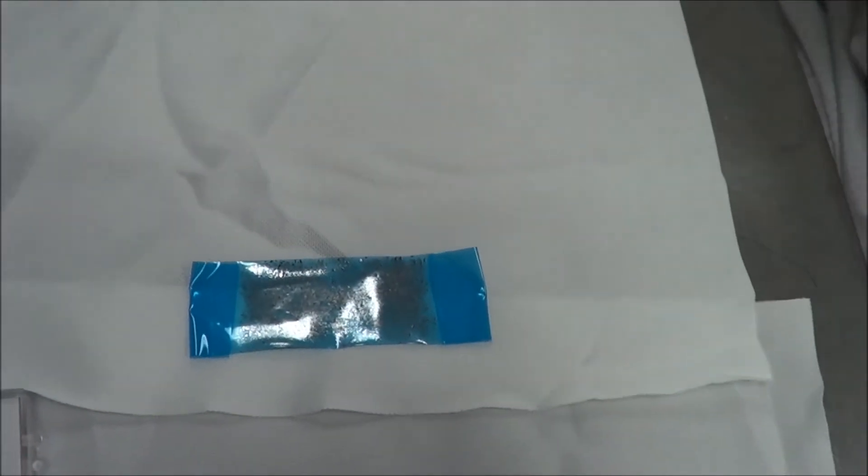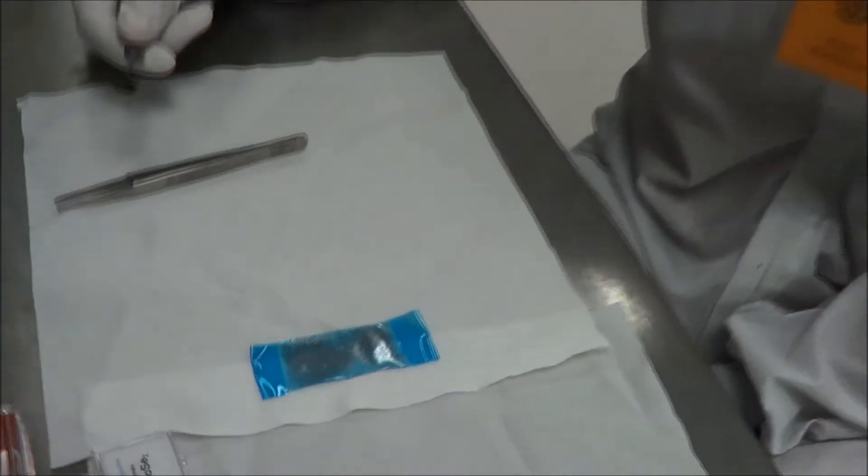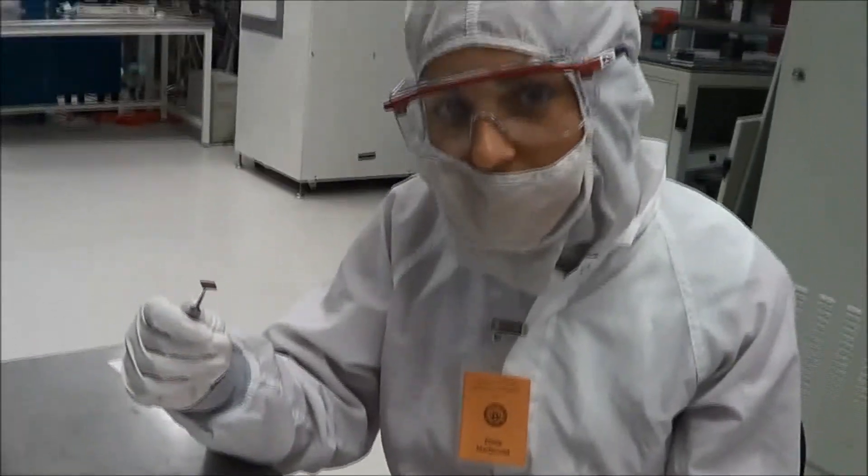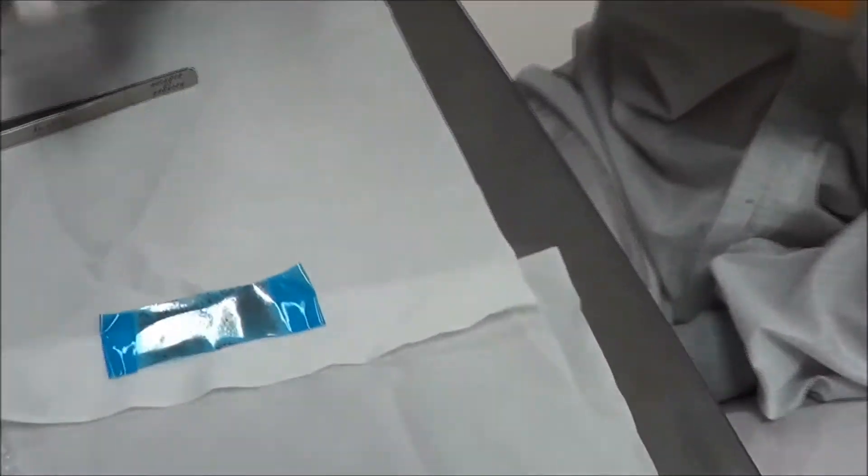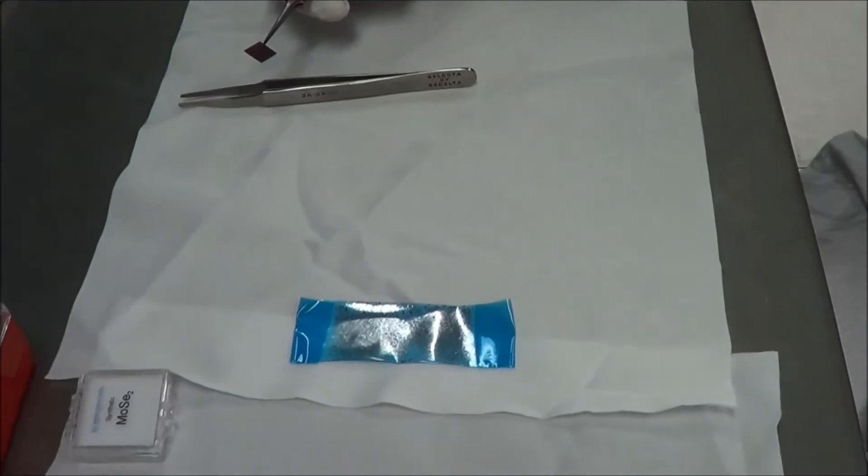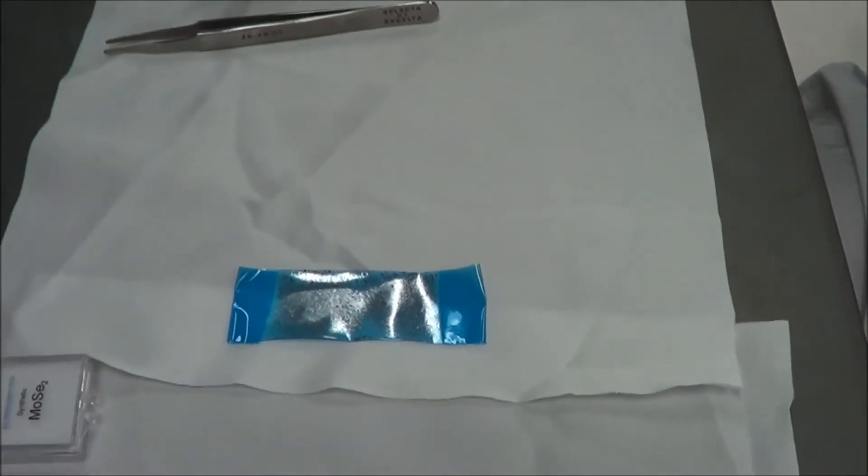In order to transfer the flakes onto your silicon-silicon oxide wafer, simply take the silicon-silicon oxide wafer, place it on top of the blue tape and tap each of the four corners. Then remove the silicon-silicon oxide wafer.